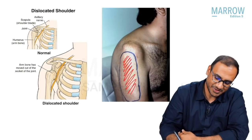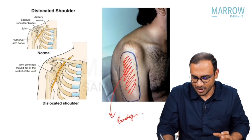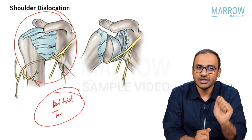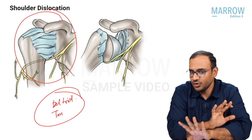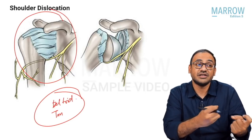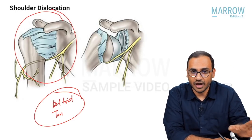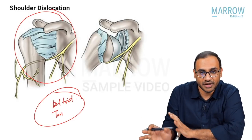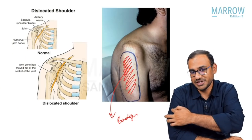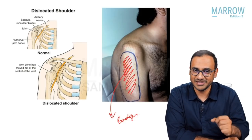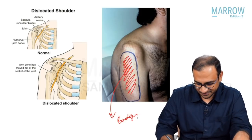The regimental badge area is named so because this is where military soldiers and policemen wear their badges. When the axillary nerve is injured, you cannot test motor function because the shoulder is already dislocated, stuck in abduction and external rotation with pain. So you test sensory function instead — you assess sensation in the regimental badge area. The patient will complain of paresthesia, pain, or tenderness in that area, which is called the regimental badge sign.